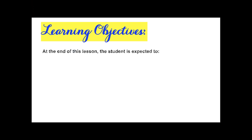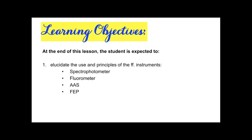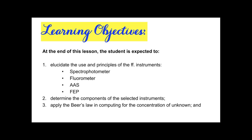For our learning objectives, at the end of this lesson, you are all expected to elucidate the use and principles of the following instruments. We will discuss four instruments: the spectrophotometer, fluorometer, the AAS, and FEP. Next, determine the components of the selected instruments, apply Beer's Law in computing for the concentration of unknowns, and determine the applications of these selected instruments.